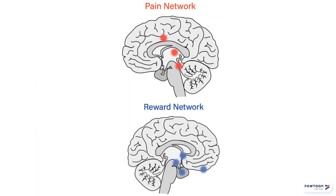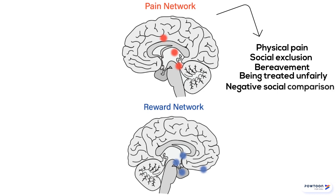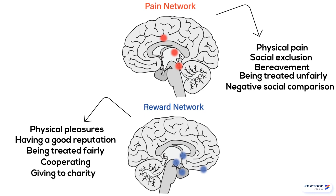This is what's called the pain and reward network. The very same regions of the brain involved in physical pain are also implicated in social exclusion, bereavement, being treated unfairly, and negative social comparison. For the reward network, physical pleasure like eating food is also implicated in having a good reputation. Being treated fairly feels rewarding, cooperating feels rewarding, and even giving to charity activates neural reward networks.